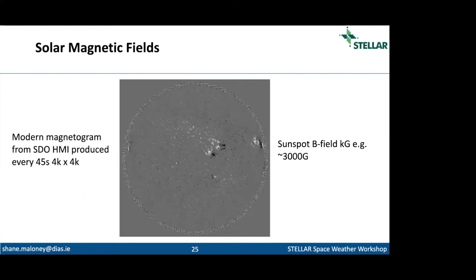This is now a modern magnetogram from SDO HMI. Basically an interferometer on board the spacecraft allows us to examine the Zeeman splitting of a particular line group, giving us beautiful images of the solar magnetic field every 45 seconds in essentially HDTV quality. Sunspots have extremely strong fields — I think the strongest recorded is around 3,500 gauss. This is our modern picture of the solar magnetic field, and this cycle is also played out in EUV emissions.